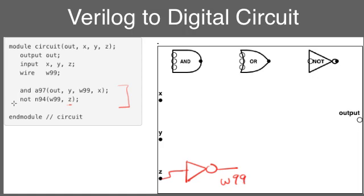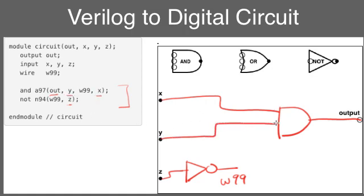With that done, I can now instantiate the AND gate. The AND gate's output is the output of our whole circuit, and its three inputs are X, Y, and W99.